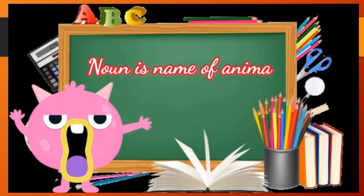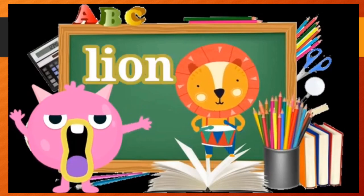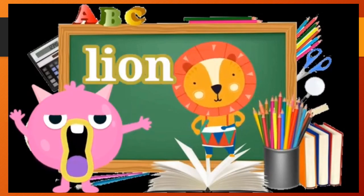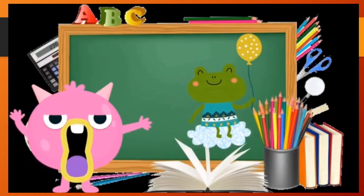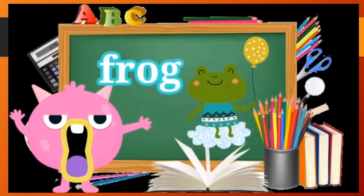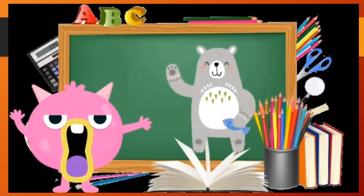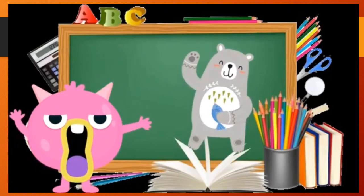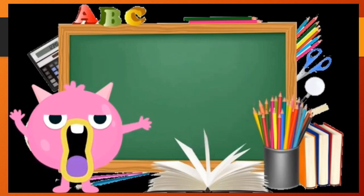Noun is a name of animal. Let us meet some of the animals. Oh, this is the king of the jungle. Lion. Lion is an example of a noun. Oh, this is a frog. A frog is also a noun. Bear. The bear is so big. Bear is a noun.